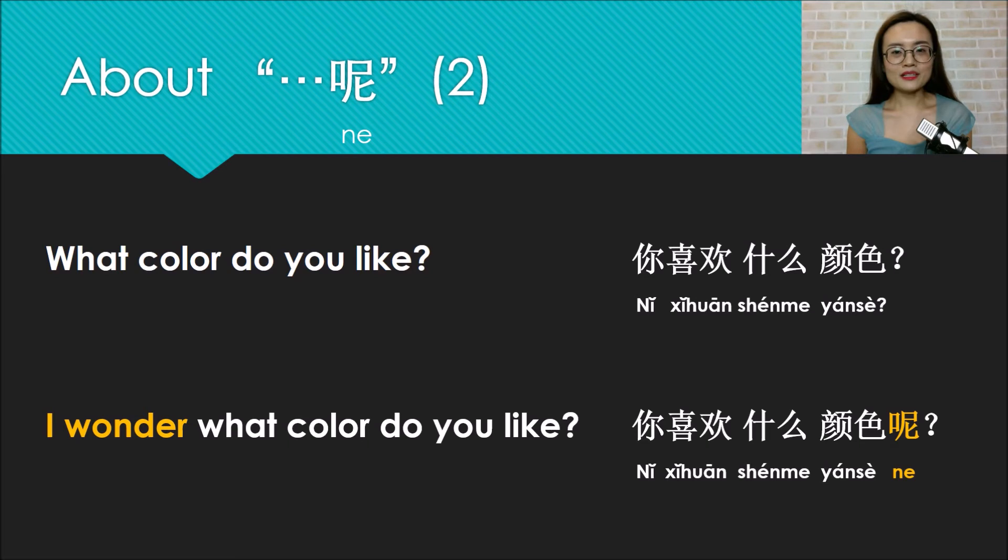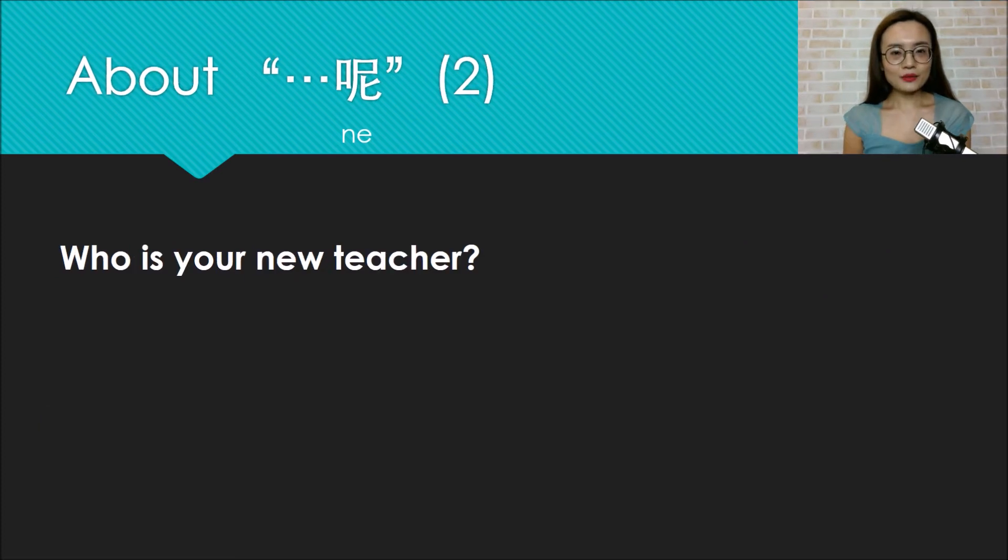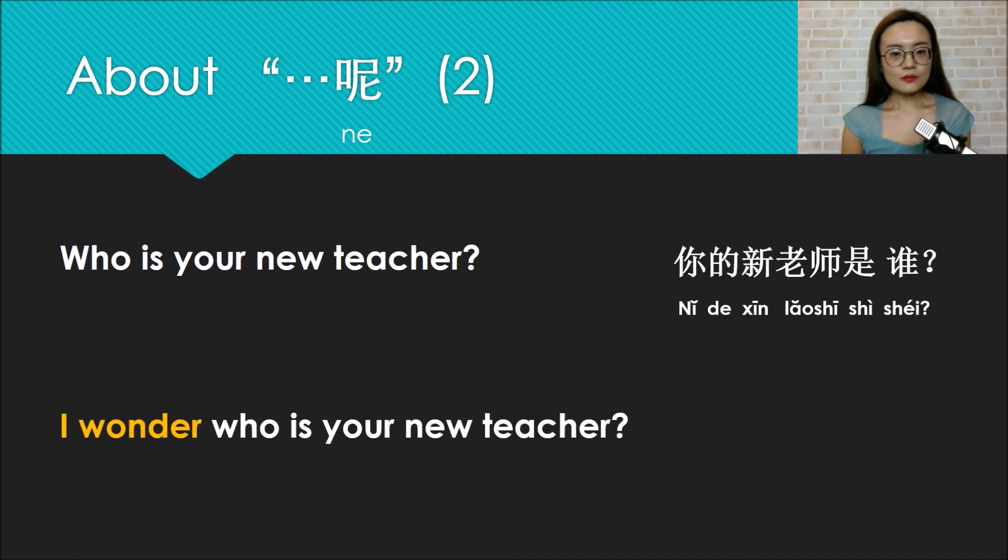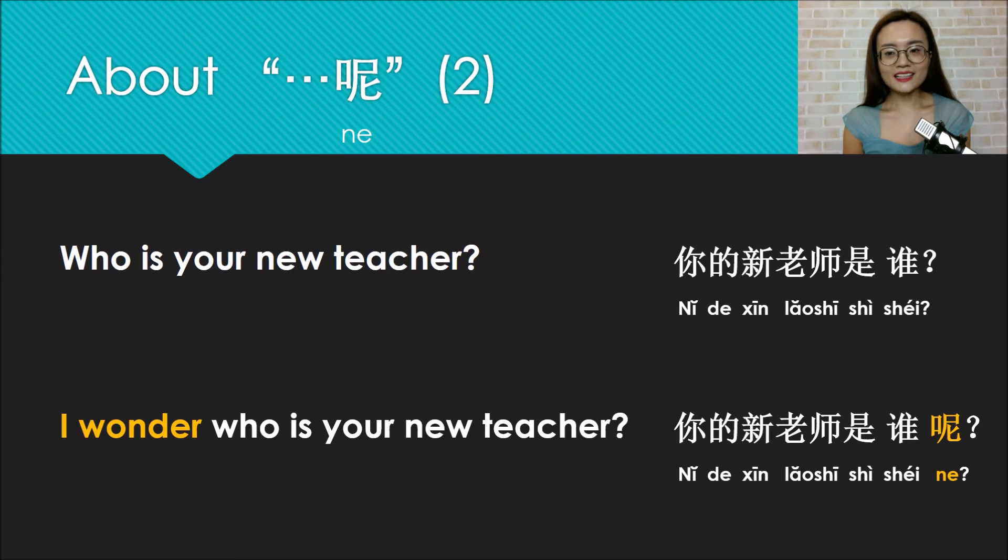That is, ni xihuan shenme yanse ne? So remember, ne expresses curiosity, like saying I wonder. Another example. Look at this sentence: Who is your new teacher? Ni de xin laoshi shi shei? So can you tell me how to say I wonder who is your new teacher in Chinese? Yes, good. We need to use ne question. That is, ni de xin laoshi shi shei ne?